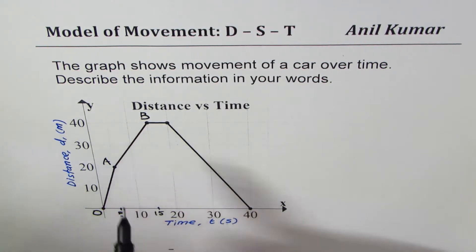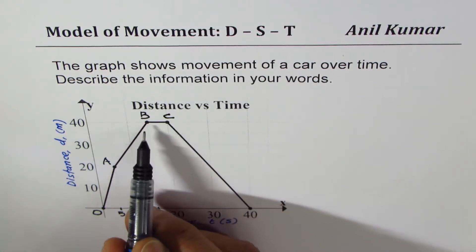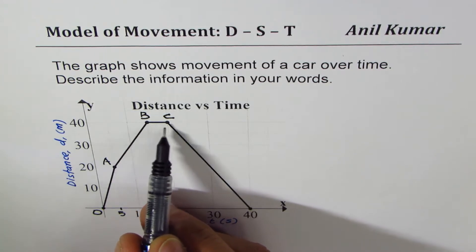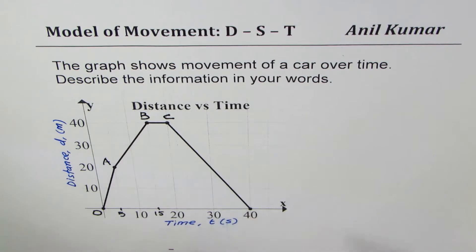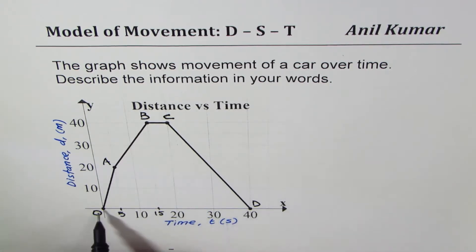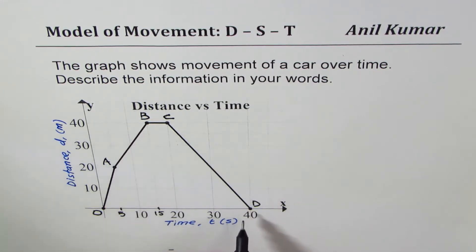From B to C the distance is not changing — no change in distance means the car is at rest. Then it returns: distance decreases, so at D the car comes back and the distance is zero from the starting point. It takes 40 seconds in all to complete this journey.